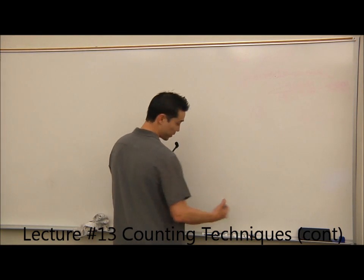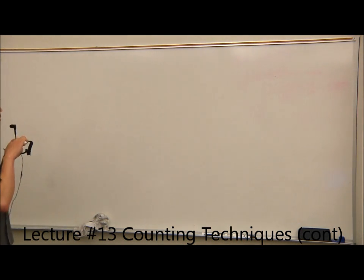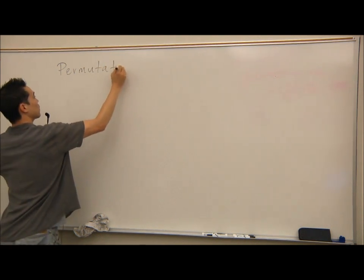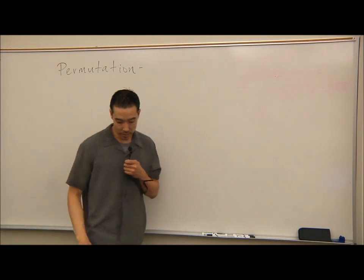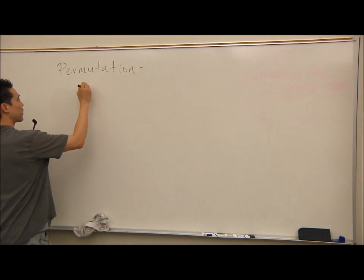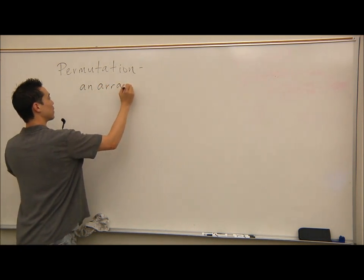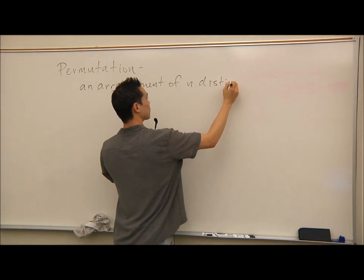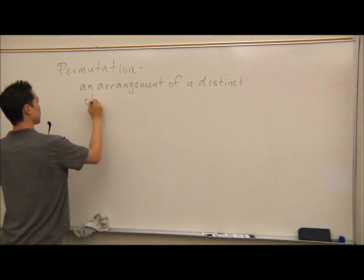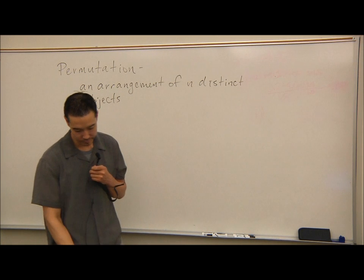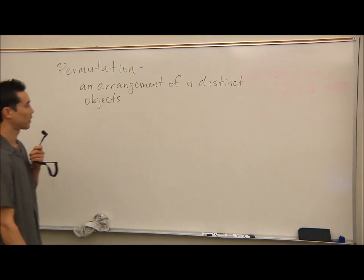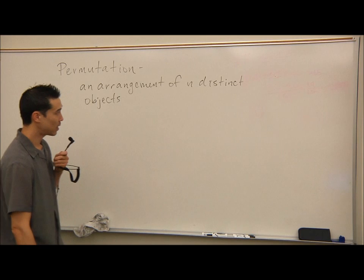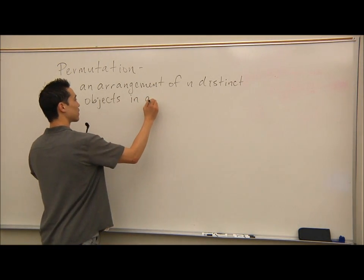Continuing with counting techniques, today the first thing we want to talk about are permutations. A permutation is an arrangement of n distinct objects in a specific order.